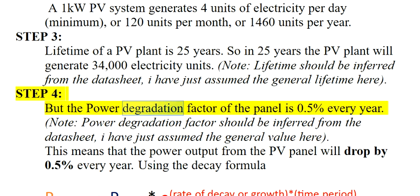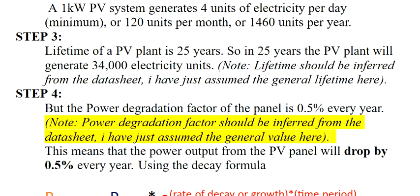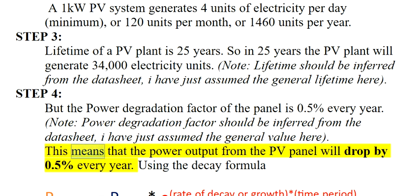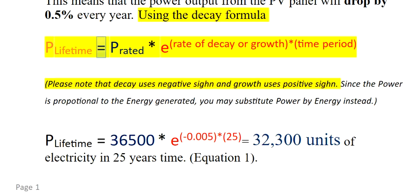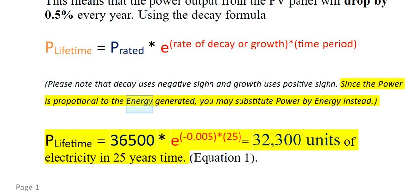Step 4: The power degradation factor of the panel is 0.5% every year. This means that the power output from the PV panel will drop by 0.5% every year. Using the decay formula: P-lifetime equals P-rated asterisk E raised to the power of (rate of decay asterisk time period). Please note that decay uses a negative sign and growth uses a positive sign. Since the power is proportional to the energy generated, you may substitute power by energy instead.